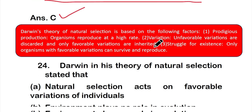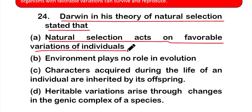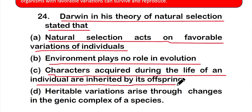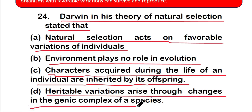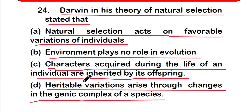Question number 24: Darwin in his theory of natural selection stated that — option A: natural selection acts on favorable variations of individuals, option B: environment plays no role in evolution, option C: characters acquired during the life of an individual are inherited by its offspring, or option D: heritable variations arise through changes in the genetic complex of a species. The correct answer is option A — natural selection acts on favorable variations of individuals.